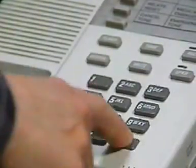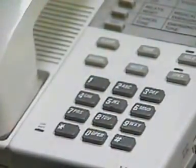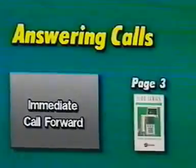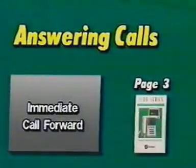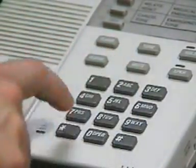To disable the call forward after timeout function, lift the handset, press pound, seven, one, pound, and hang up. Now let's enable the immediate call forward function to forward all calls from an admin phone to another station. To enable the immediate call forward function, lift the handset, press pound, seven, two, star, then hang up.